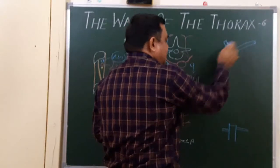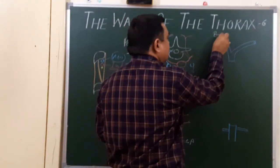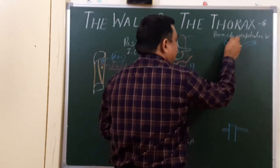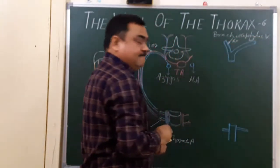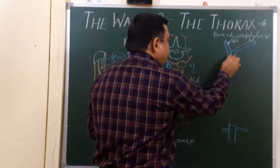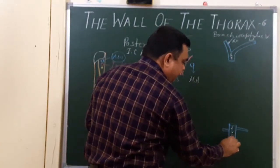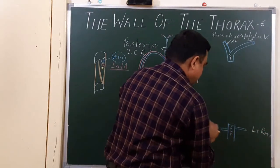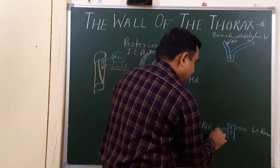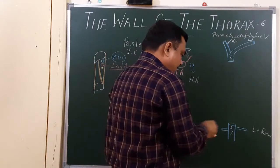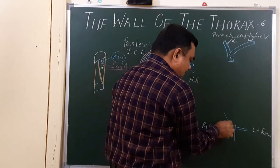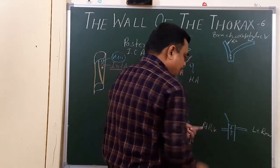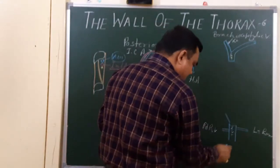In this diagram, this is the azygous vein and this is the hemi- or accessory hemi-azygous vein. This is the right and this is the left brachiocephalic vein. This is the right renal vein and this is the left renal vein. One vein opens here into the inferior vena cava — this vein is the lumbar azygous.